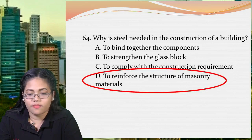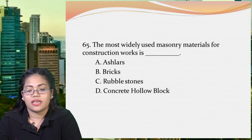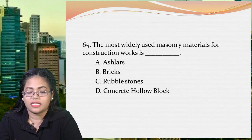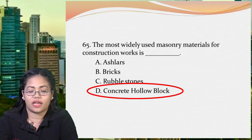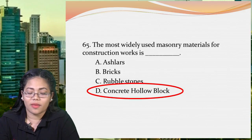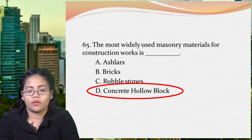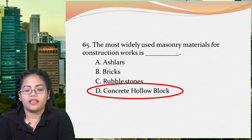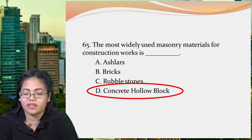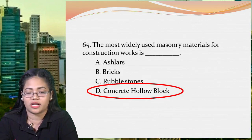Next: the most widely used masonry material for construction work is A: ashlars, B: bricks, C: rubble stone, or D: concrete hollow blocks. The answer is letter D, concrete hollow blocks. CHBs are compacted by high pressure and vibration, making them very strong and resilient, and they are also environment-friendly and cost-efficient, insulated against heat, dampness, and sound. Bricks are made of clay and need plastering and color washing. Ashlars are used as an alternative to brick. Rubble stone is an aggregate.